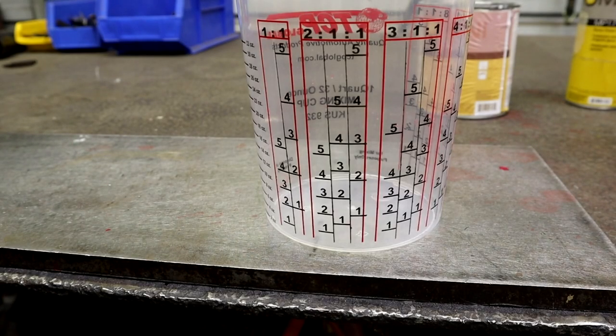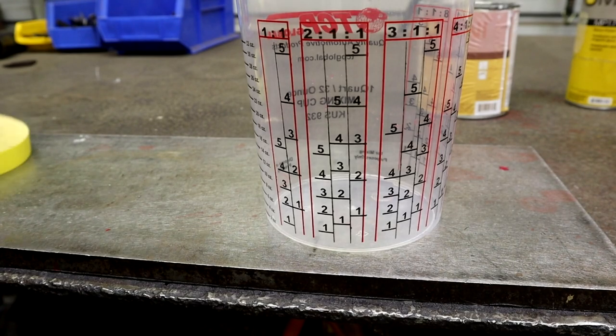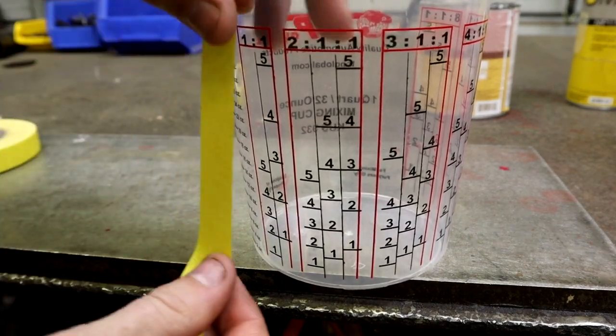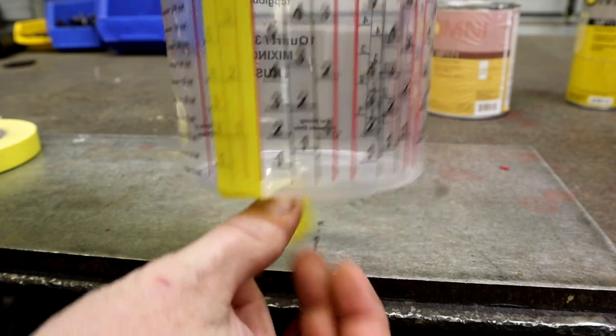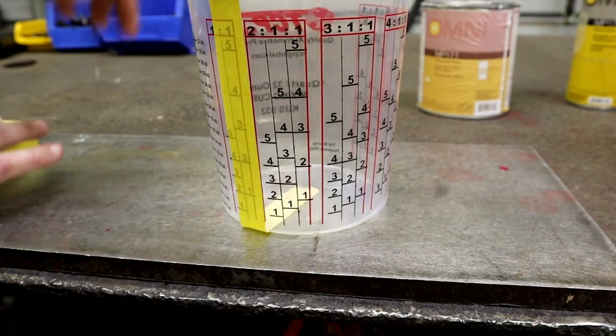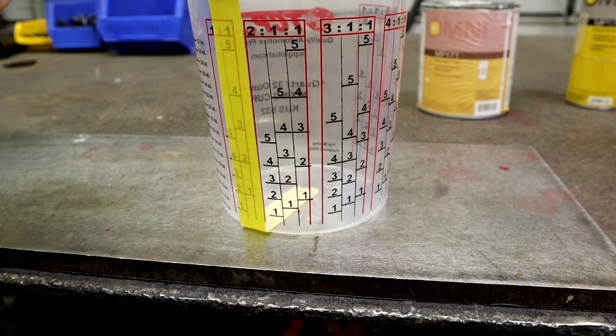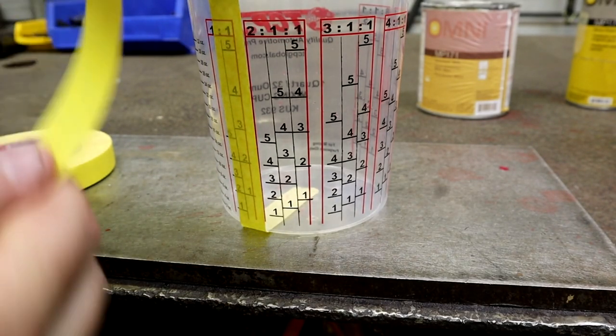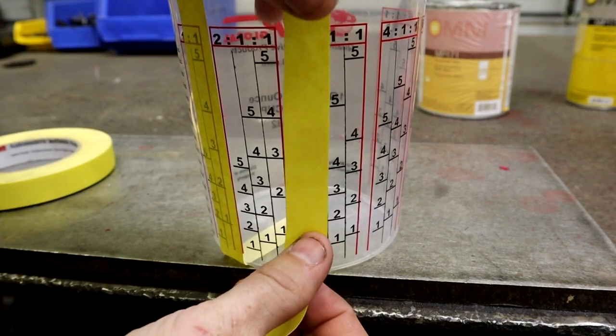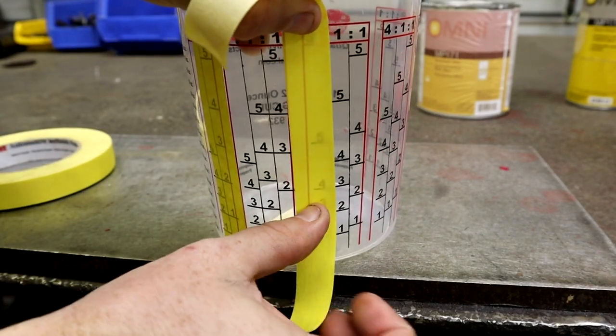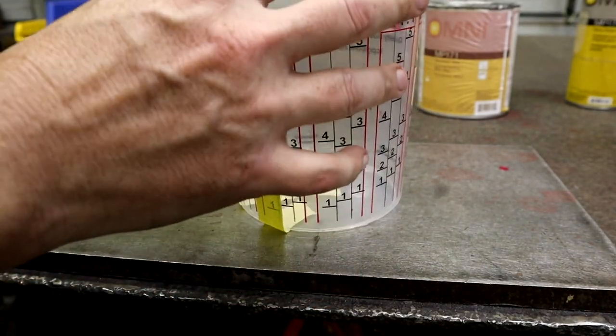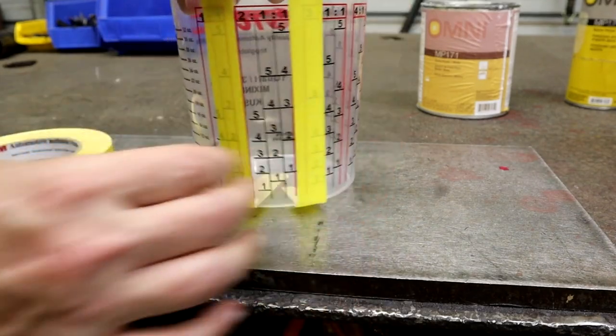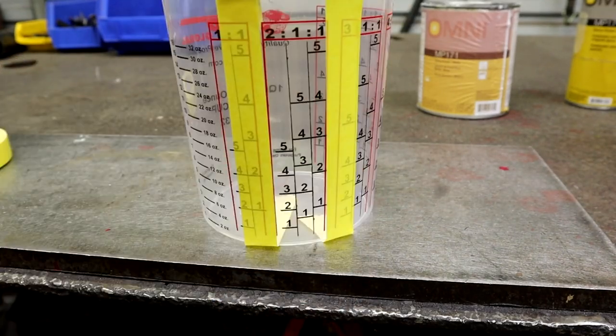Alright guys, we're going to go to the two to one real quick. And this is the one the old ones didn't used to have because a lot of your base coats are one to one. And I know some of the old house of color stuff used to be two to one. So we're going to do a two to one here. Now some, I think there's some base coats out there that may have a hardener in them. And that's where you just follow directions on your paint can. Don't ad lib it or nothing like that. Just try to follow your directions.